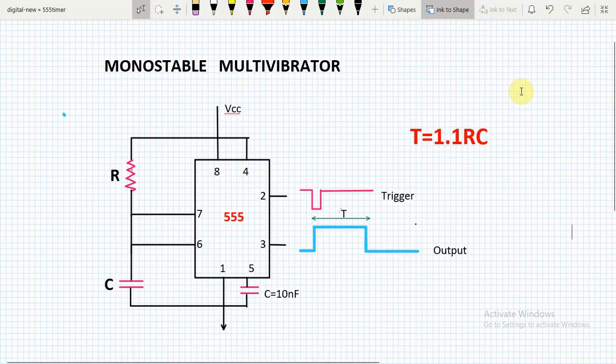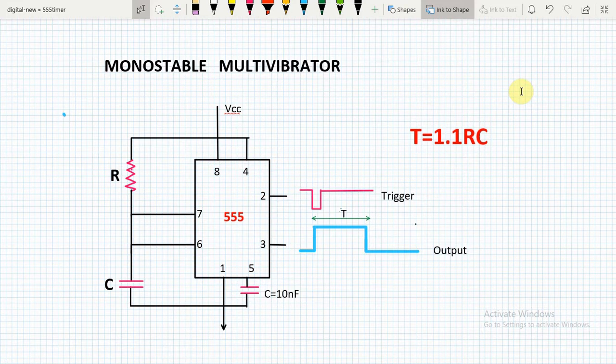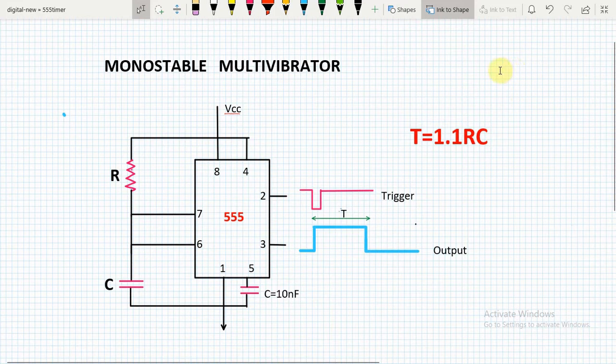In this video we will see the demonstration of monostable multivibrator. The monostable multivibrator has one stable state and makes use of the trigger pulse. Whenever the trigger pulse comes, the state changes from low to high. It remains high for a certain amount of time and then goes low again. It remains low until the next trigger pulse comes, and on-time depends upon the value of the resistance and the capacitor.